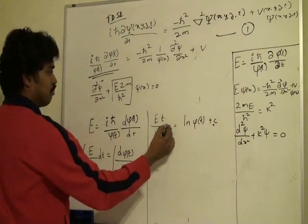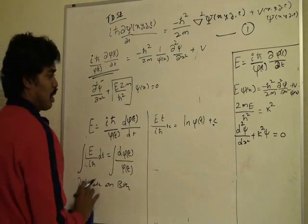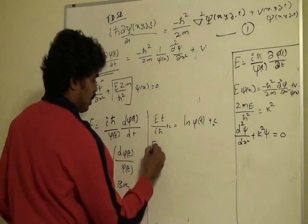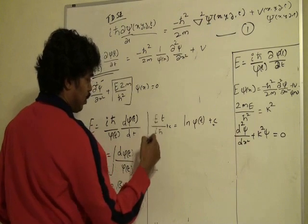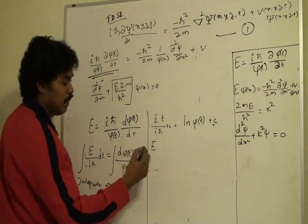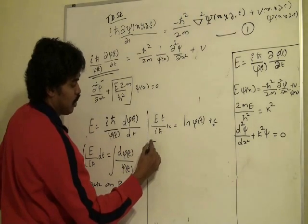at this point we are going to ignore the constant. So this can be written as multiply i in numerator and denominator, and this becomes i squared,